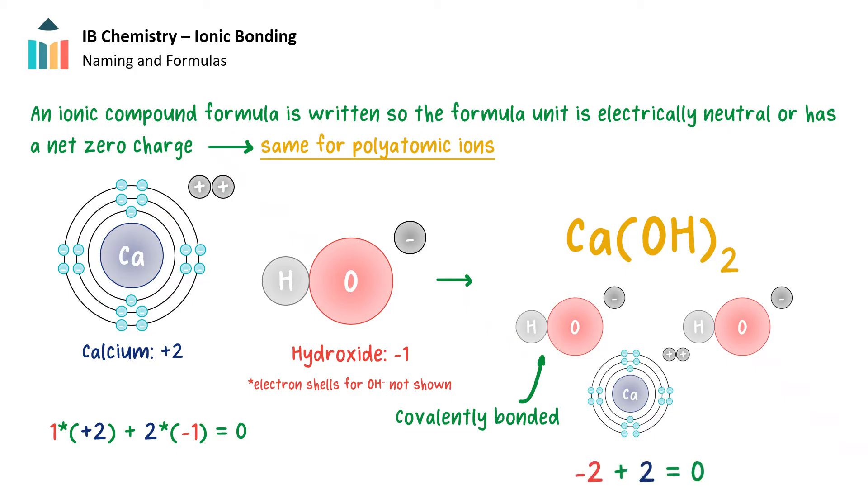The formula for hydroxide or any polyatomic ion never changes in the process of ionic formula writing. The formula becomes Ca(OH)2. Parentheses must be used to indicate that there are two groups of the polyatomic ion hydroxide. Just a note, the hydroxide is an ion with an overall charge of -1 and the entire polyatomic ion is involved in ionic bonding with the calcium ion. However, the oxygen and hydrogen within the polyatomic ion are covalently bonded.